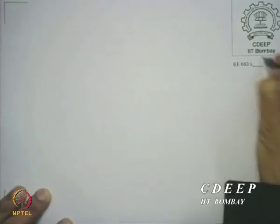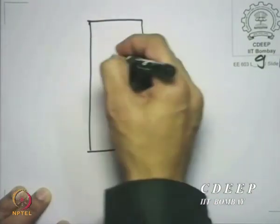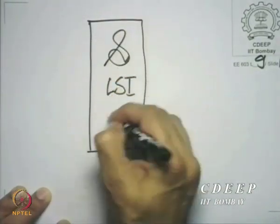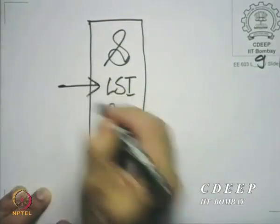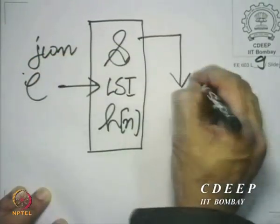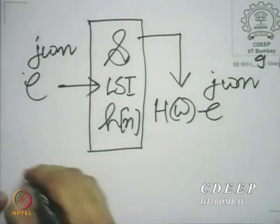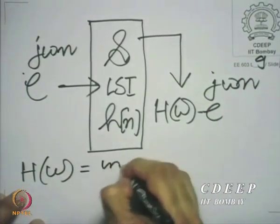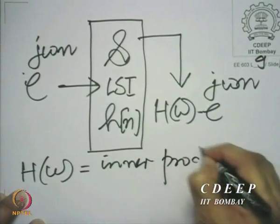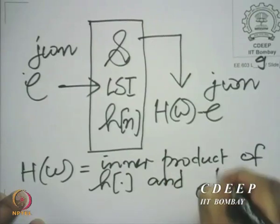Now, there is a very interesting interpretation that we have just given to this whole concept of frequency response. What we have said is that if you have an LSI system S with input e raised to the power j·ω·n — a complex exponential as the input — you get h(ω)·e raised to the power j·ω·n coming out, and h(ω) is essentially the inner product, the dot product, of h(n) and e raised to the power j·ω·n.